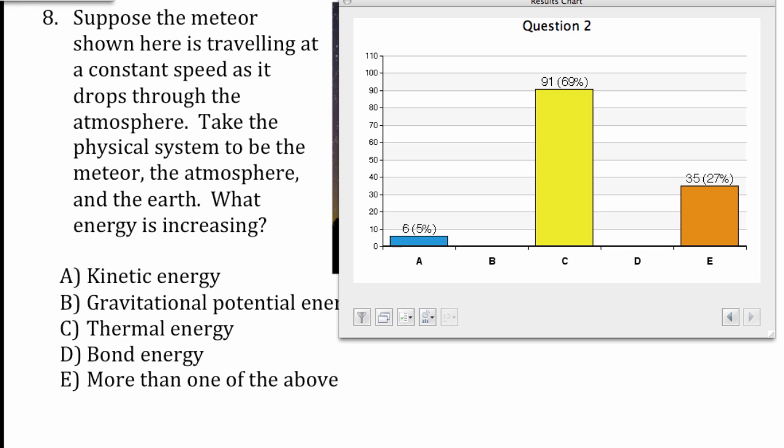Gravitational potential energy, nobody answered that. I would take thermal energy goes up, clearly the thing lights up. I would take bond energy goes up, but really both of them go up. Bond energy and thermal energy go up.